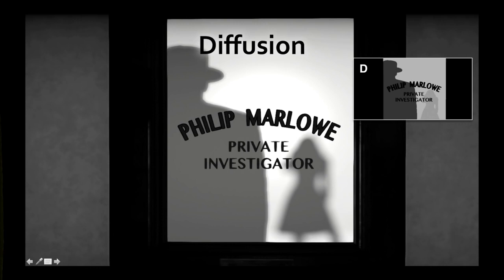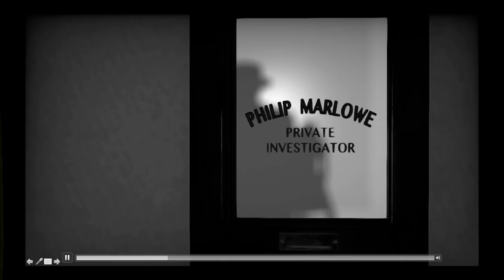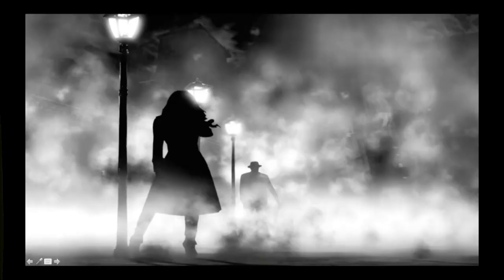This becomes even clearer when the scene is animated: as the character wearing the hat moves farther into the scene, the amount of blurring changes. When he's close, he's sharply in focus, and as he moves far away, he gets blurred more.